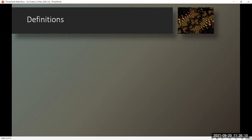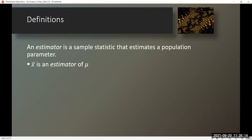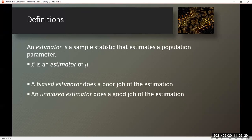Definitions. An estimator is a sample statistic that estimates a population parameter. X-bar is an estimator of mu. A biased estimator does a poor job of the estimation, while an unbiased estimator does a good job of the estimation.